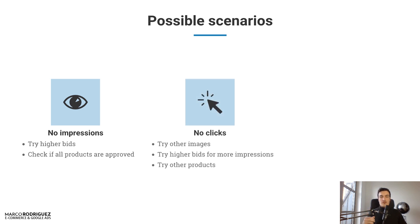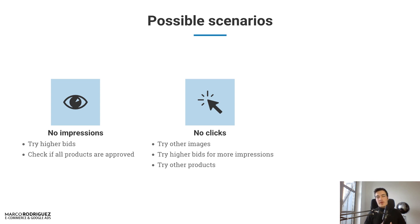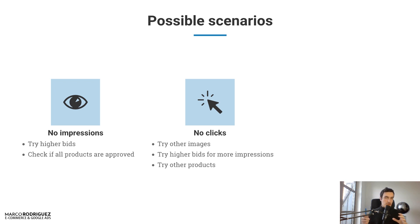If you don't have clicks, first try other images, then try higher bids to get more impressions, and simply try other products. You are not married to your products. If you have a product working on Facebook and you want to make it work on Google — that's the wrong approach. Yes, try it, but if it doesn't work, don't force it. Maybe it's just not a good product for Google, or you have too many competitors. Try other images, higher bids, and even other products.